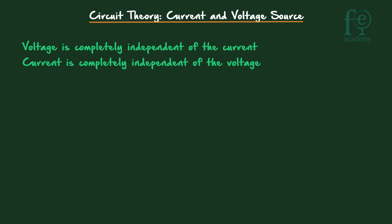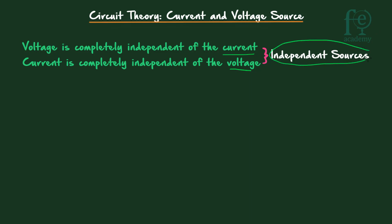If the voltage across a device is completely independent of the current through it, or the current through the device is completely independent of the voltage across it, then we call such a device an independent source. In independent sources, voltage and current are independent of each other.